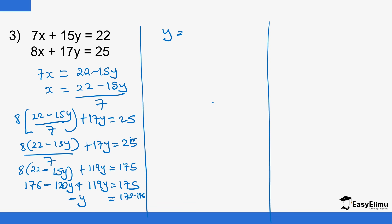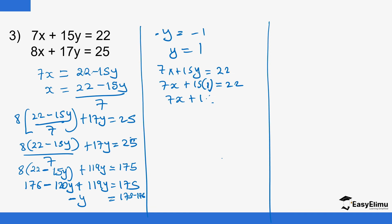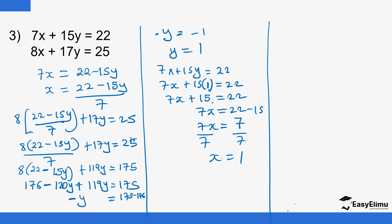So negative y equals negative 1, meaning y equals 1. Substituting y equals 1 back into equation 1: 7x plus 15y equals 22, so 7x plus 15 times 1 equals 22, giving 7x plus 15 equals 22. Moving 15 to the other side: 7x equals 22 minus 15, so 7x equals 7. Dividing both sides by 7, x equals 1. So x equals 1 and y equals 1.